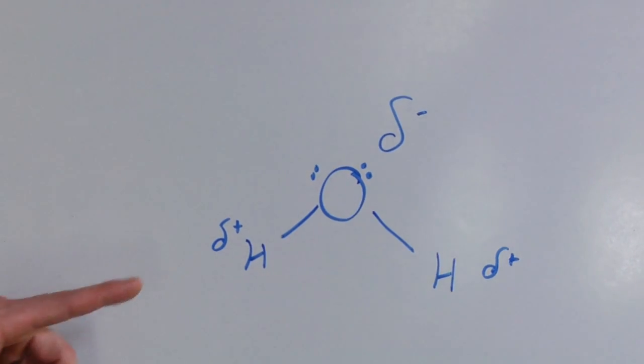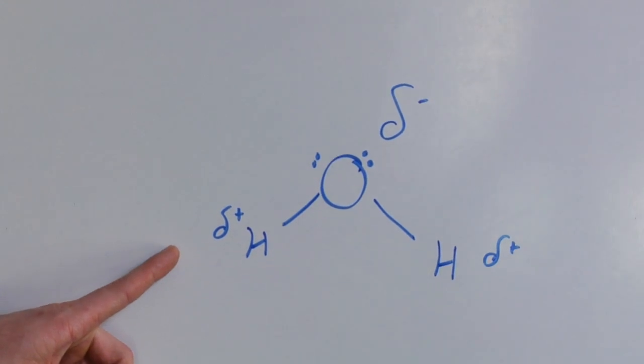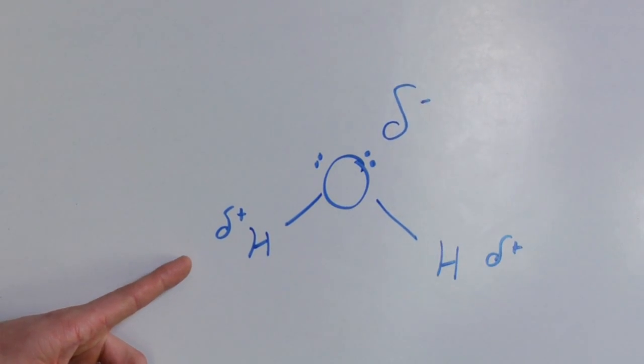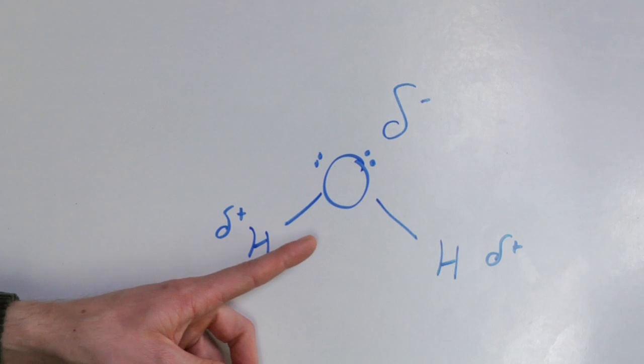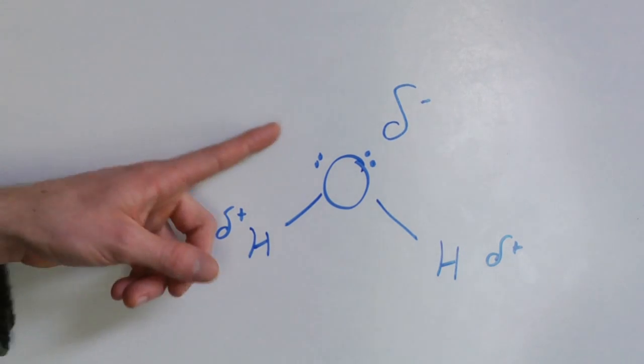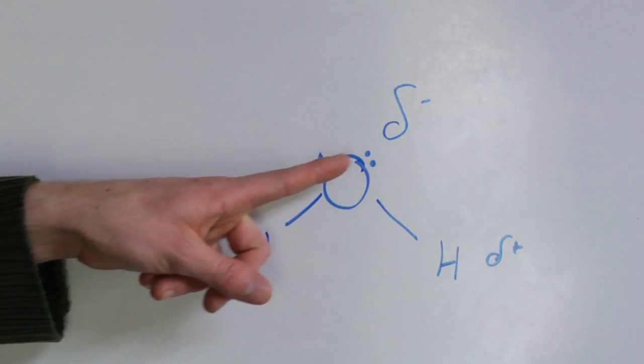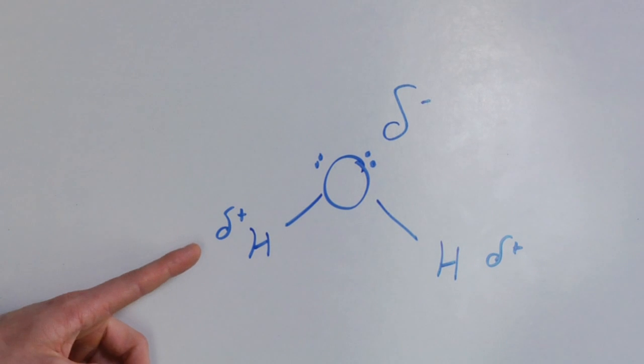So let's use water as an example. Water is made up of oxygen and two hydrogens. They bond together. The oxygen also has four additional electrons that it keeps to itself.